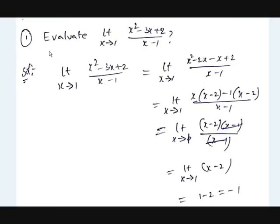The first example is: evaluate limit x tends to 1 of (x² minus 3x plus 2) divided by (x minus 1). If you substitute 1, the numerator becomes 1 minus 3 plus 2, which is 0. The denominator also becomes 0. So it is in the 0/0 form. We can use factorization here since there are no square or nth roots — only a quadratic expression x² minus 3x plus 2.